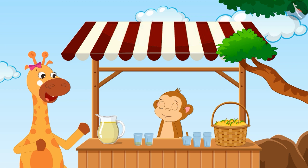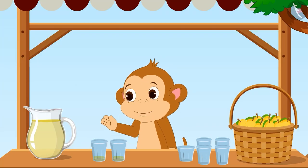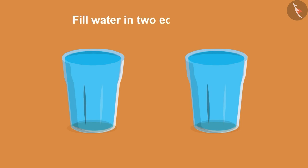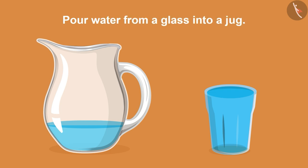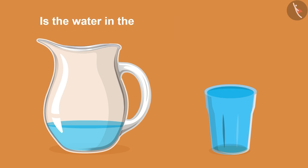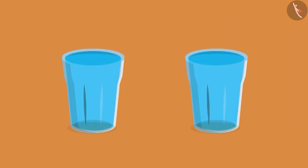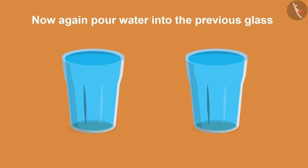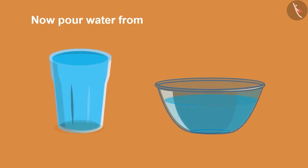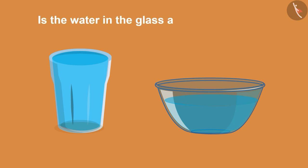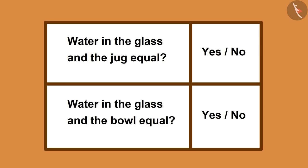The juice is very tasty, Babloo. Thanks. Children, now you can fill water in two equal glasses. Then pour water from one glass into a jug. Is the water in the glass and the jug equal? Now, again, pour water into the previous glass. Is the water equal? Now pour water from a glass into a white bowl. Is the water in the glass and the bowl equal? Share your answers with your friends and family members by writing them in a table like this.